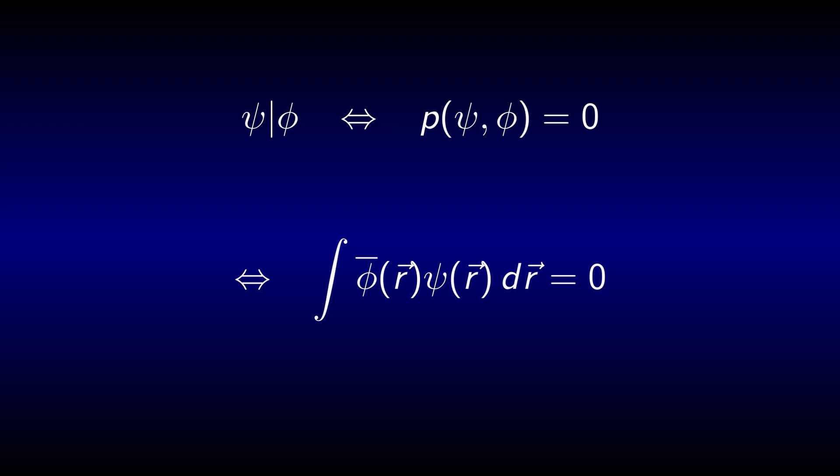A set of normalized wave functions in which every two different wave functions are orthogonal to one another is called an orthonormal set. If we can linearly combine the wave functions to describe every state that interests us, we call it an orthonormal basis set.